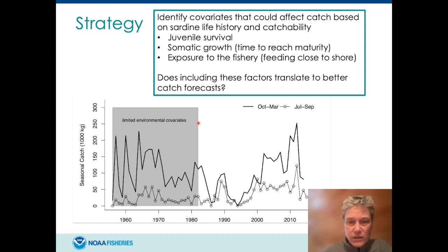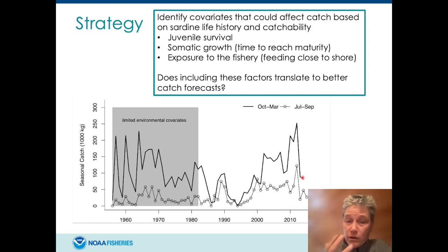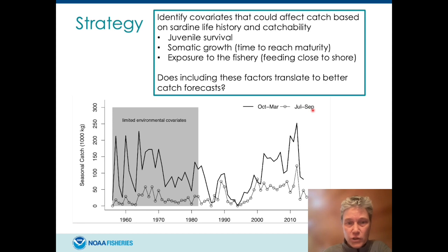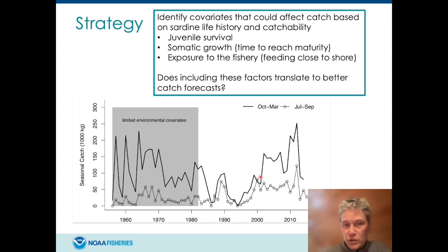For the work you're going to see today, I'll be focusing on data from the early 1980s to 2015 — the period in which we had our full complement of environmental covariates. I'll be dividing the catch into the monsoon catch, which is July to September, and the post-monsoon catch, which is October to March. The majority of the catch is occurring in this October–March period, shown as the dark line here.